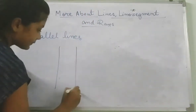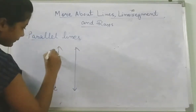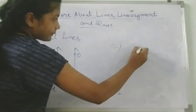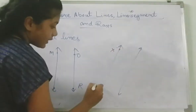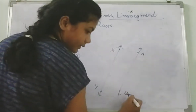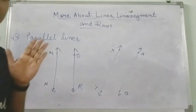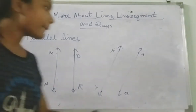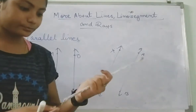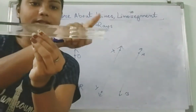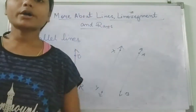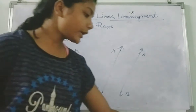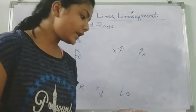Like these vertical parallel lines — MN and OR. Or it can be slanting parallel lines — X, Y and A, B. Lines which never meet each other are called parallel lines. For example, the edges of a ruler — the borders will never meet each other. Or the railway tracks — this line and this line will never meet each other. So these are parallel lines.